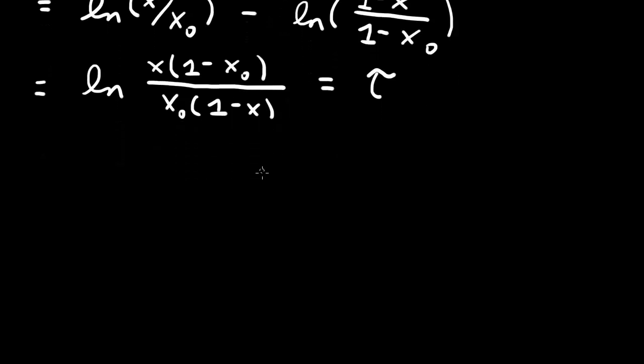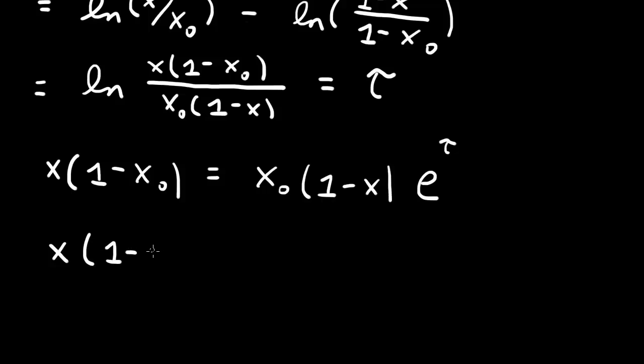Now we want to solve this for x. We can do that by taking exponential of both sides and then cross multiplying. That will become x times (1 minus x₀) and then we get x₀ times (1 minus x) times exponential e to the τ. Isolate x. We have a (1 minus x₀) from here, and then we have a minus x₀ e to the τ. Bring that to the left, that becomes plus x₀ e to the τ, and what's left on the right hand side is just an x₀ e to the τ.